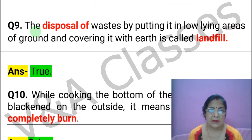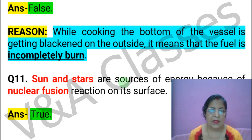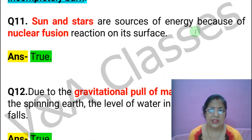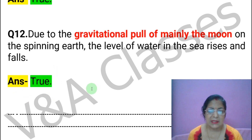Next statement: The ozone layer absorbs harmful infrared radiation. This statement is FALSE. Next statement: The sun and stars are sources of energy because of nuclear fission reactions on their surface. This statement is TRUE. Next statement: Due to the gravitational pull of mainly the moon on the spinning earth, the level of water in the sea rises and falls. This statement is TRUE.